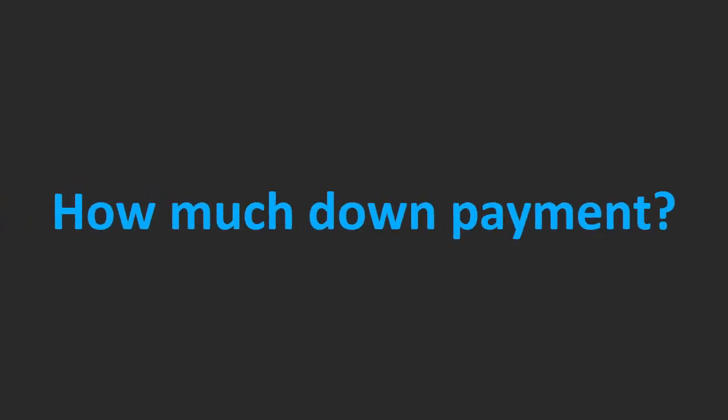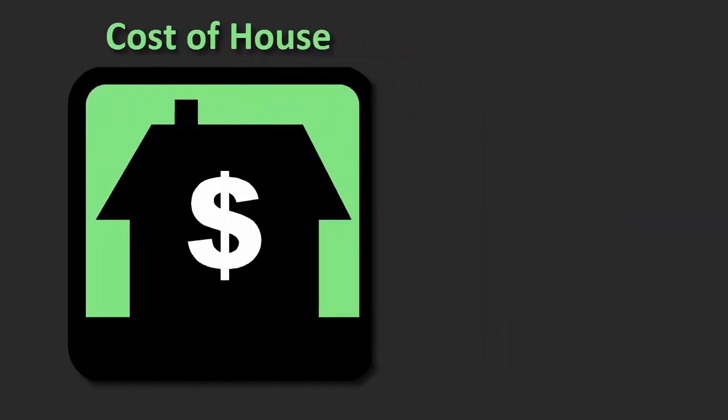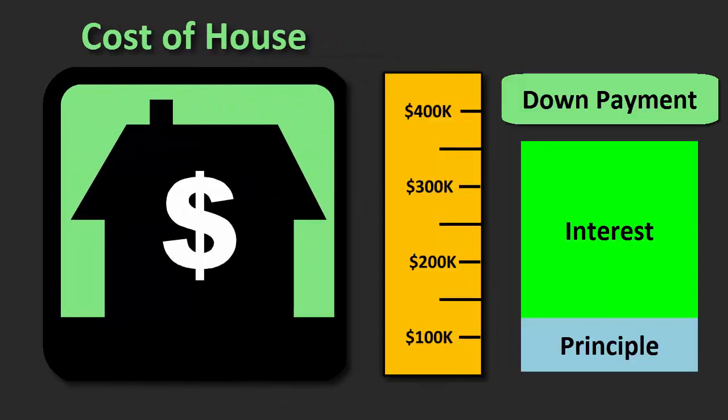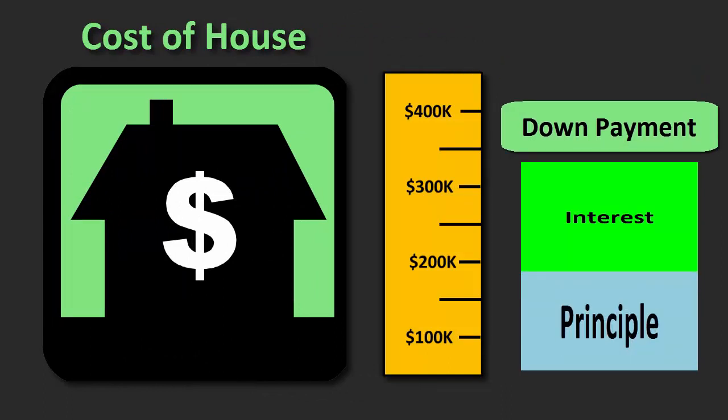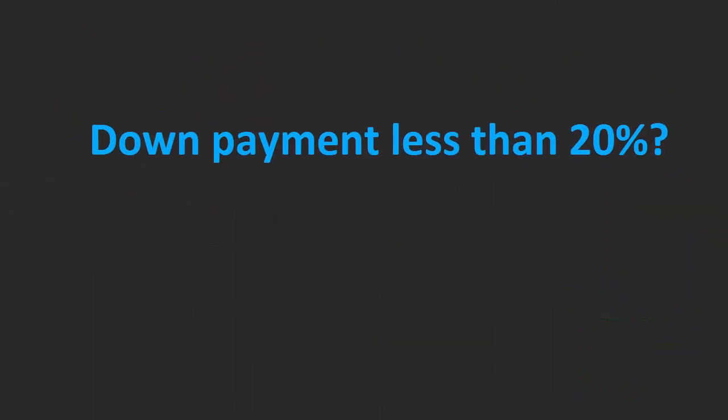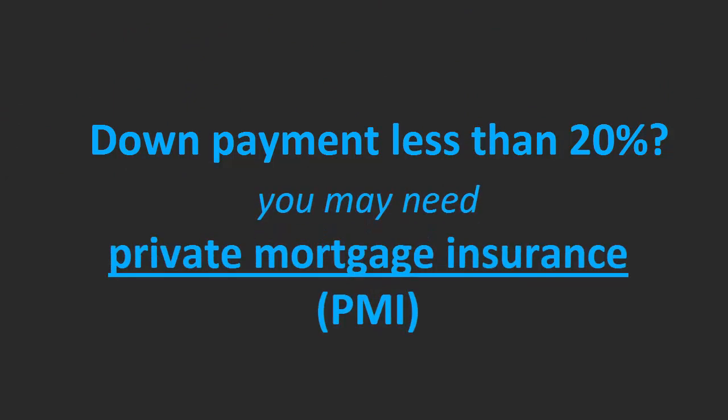This brings us to the second primary factor: your down payment. A higher down payment means a smaller mortgage, which lowers your interest payments, thereby lowering your overall house expenses. Further, if your down payment is less than 20 percent of the house price, your loan will likely require the additional expense of private mortgage insurance, or PMI, as part of your monthly house payment.